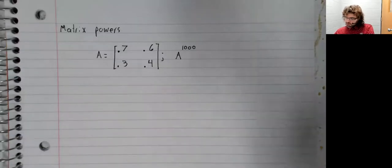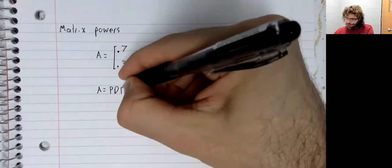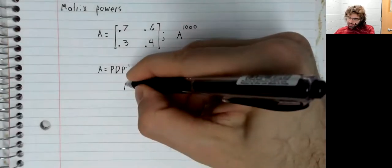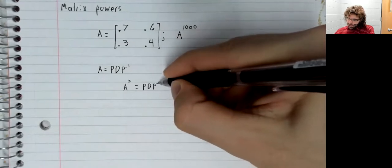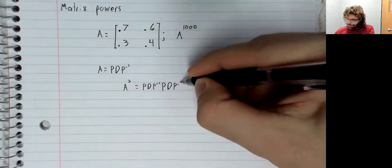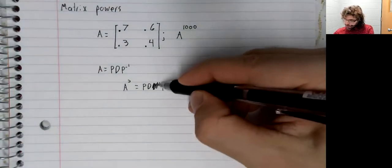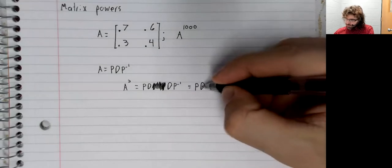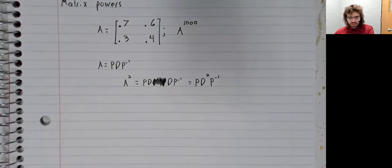Now, suppose that we could diagonalize A. Then when we square A, you see we have a P and a P inverse sitting next to each other. Those cancel and we get P times D squared times P inverse.